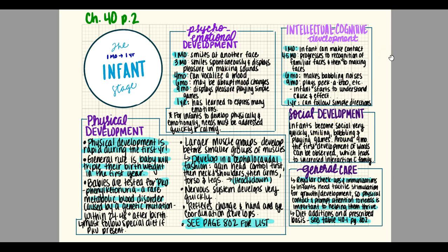For intellectual/cognitive development: by one month old the infant can make eye contact. By four to five months that progresses to recognition of familiar faces and then to making faces back at them. By six months they start to make babbling noises. By nine months they play peekaboo and start to understand cause and effect. By a year old they can follow simple directions. Socially, infants become social quickly by smiling, babbling, and playing games. Around nine months the first words can be observed, which leads to increased interactions with family — families try to get the baby to say mama, dada, and so on.